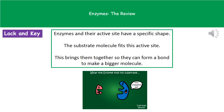Enzymes have something called an active site, which is the most important part of the enzyme. The active site has a very specific shape, and that shape fits perfectly with the substrate — the chemical it's going to react with. When the substrate molecule fits into the active site, it brings together the required chemicals so they can form a bond to make a bigger molecule.